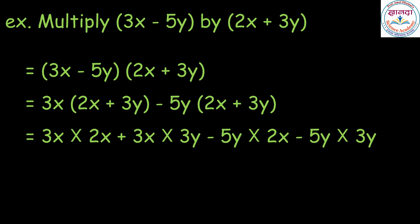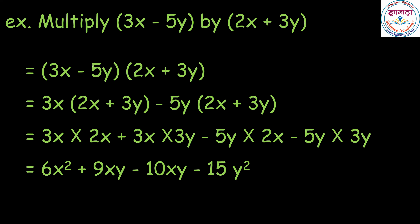Again using the distributive property, we get 3x into 2x, plus 3x into 3y, minus 5y into 2x, minus 5y into 3y. After multiplication, we get 6x square plus 9xy minus 10xy minus 15y square.